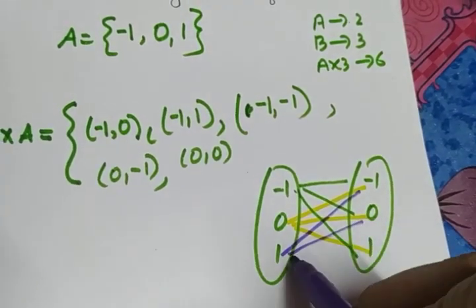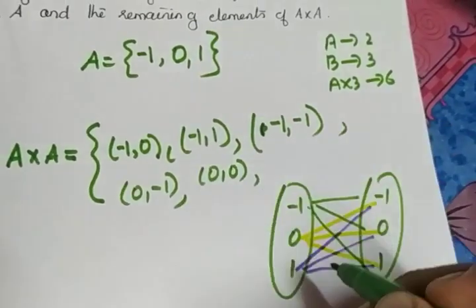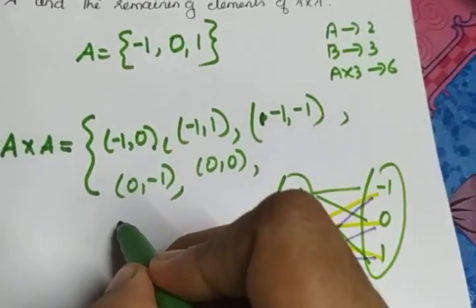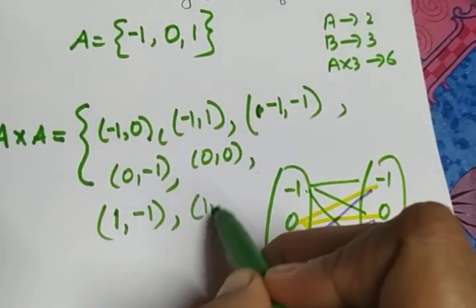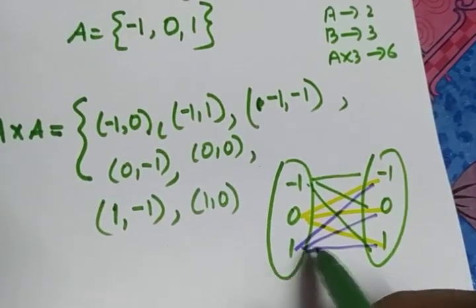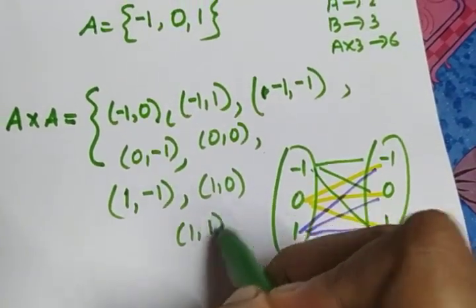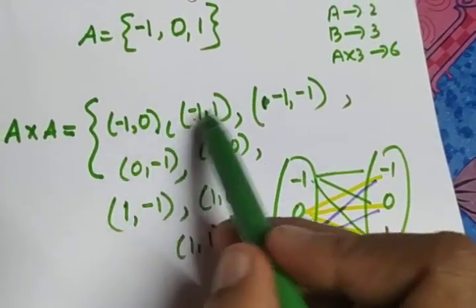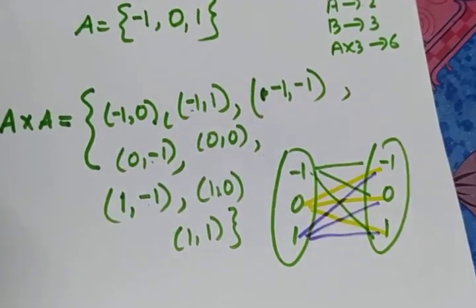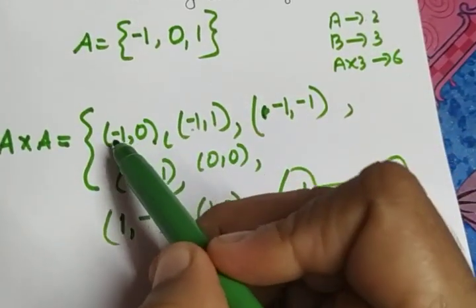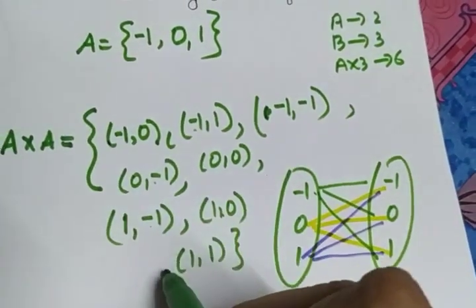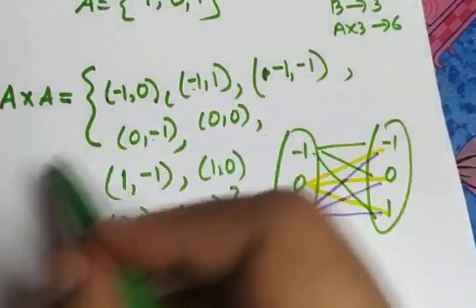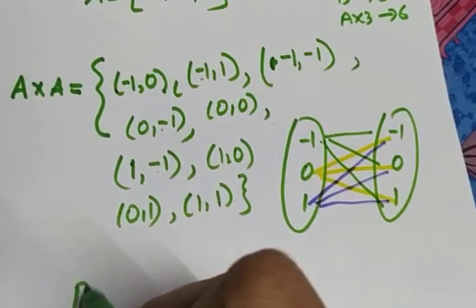For the third element, one: it maps to minus one, zero, and one, giving (1,-1), (1,0), and (1,1). None of these were given, so we write all three. Count them all: one, two, three, four, five, six, seven, eight, nine — all nine elements of A cross A are written.